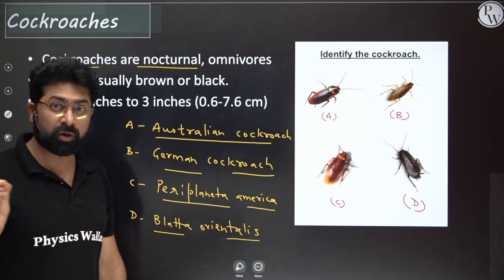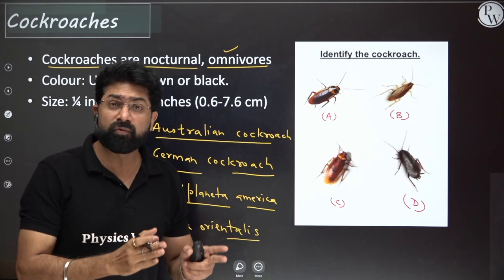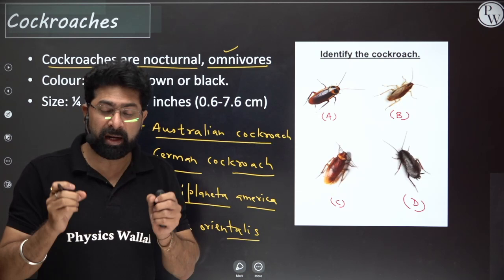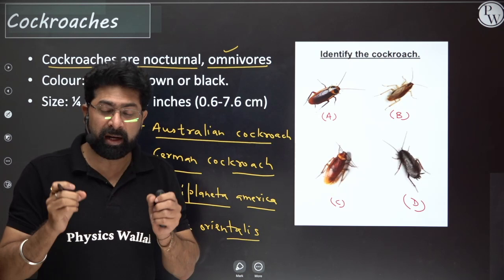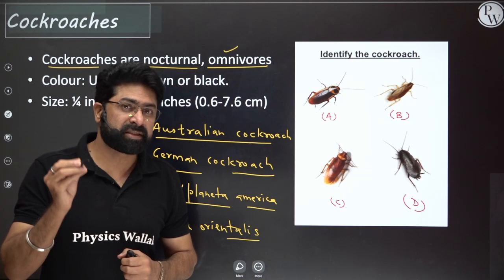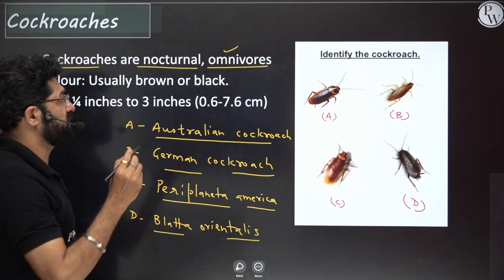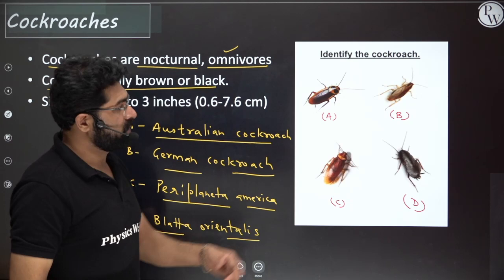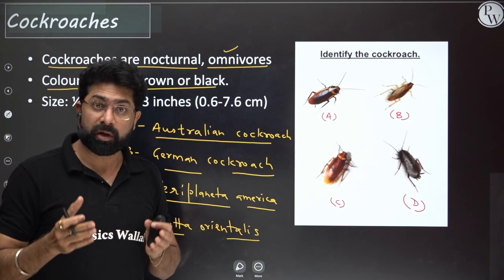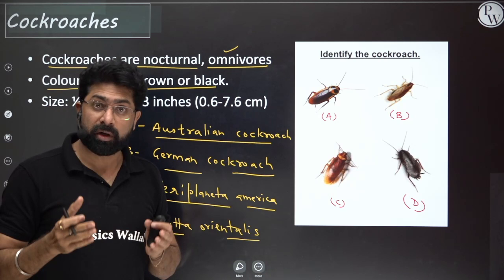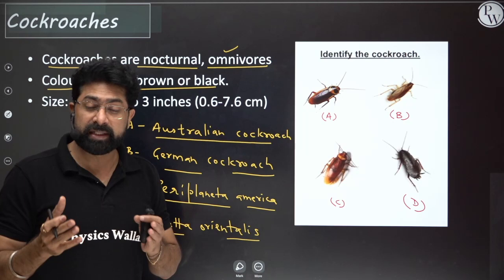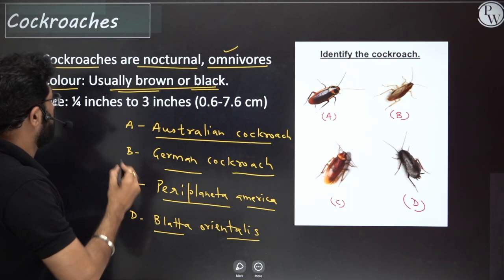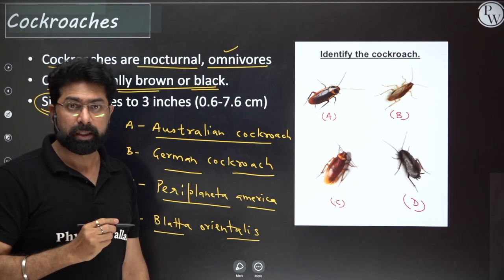Cockroaches are nocturnal — they are more active during night time; you see them in the kitchen moving around at night. They are omnivores. One important question: are cockroaches omnivores or scavengers? Let's discuss why we can't consider cockroaches as scavengers. Their color is usually brown or black, but bright yellow, red and green cockroaches have also been discovered in some tropical regions.